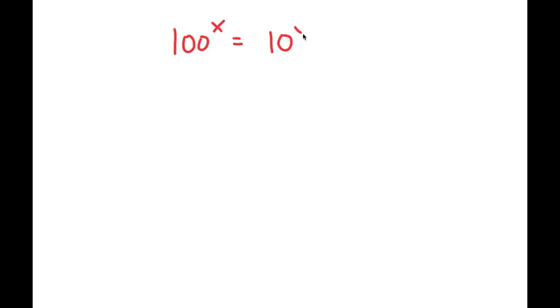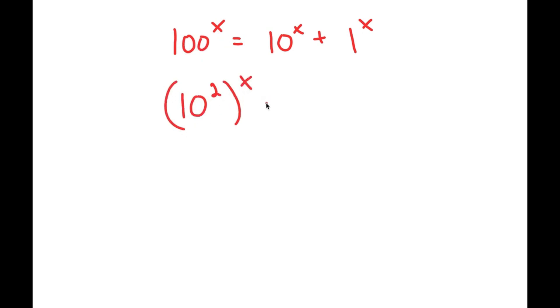In this video, I'm going to solve the problem: 100 to the power of x is equal to 10 to the power of x plus 1 to the power of x. To solve this, I'm first going to rewrite 100 to the power of x as 10 squared to the power of x, so now this equals 10 to the power of x plus 1 to the power of x.